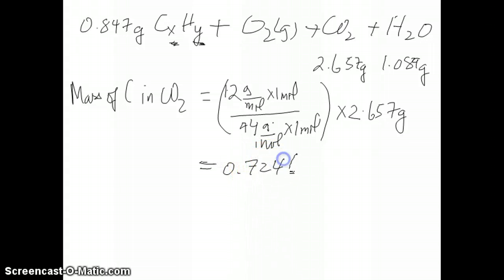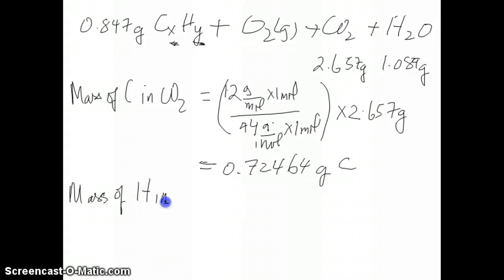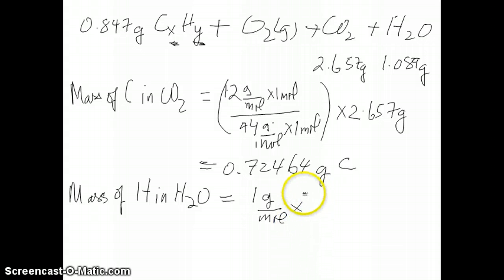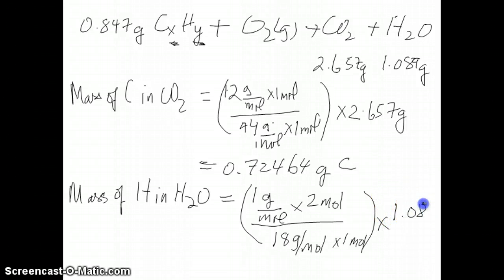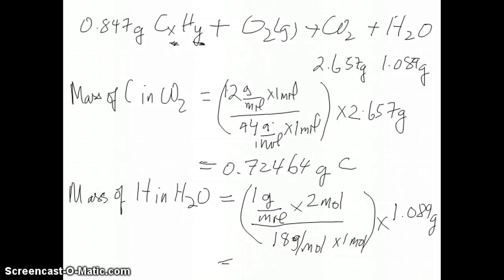Now for the mass of hydrogen in water: pay attention that there are two hydrogens in water. Each hydrogen is 1 g/mol, so that's 2 g/mol of hydrogen total, divided by 18 g/mol for water — that's the percent composition of hydrogen in water. Multiplying by 1.089 grams of water gives 0.121 grams of hydrogen.